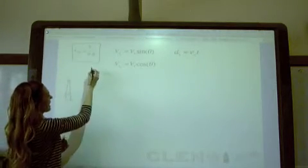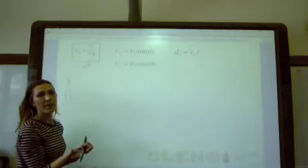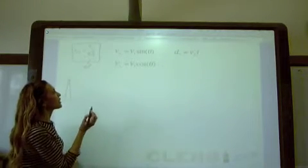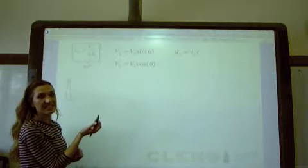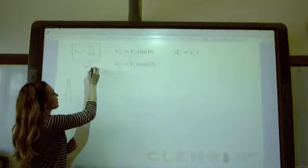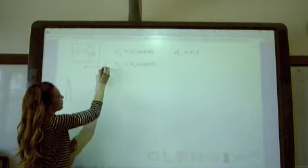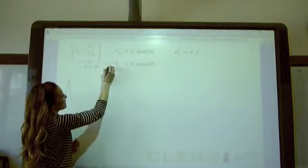And that 9.8 is just acceleration, so if you happen to get a problem where you're using the US system instead of SI, just make sure that you switch that to 32.2, because that would be feet per second squared.